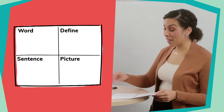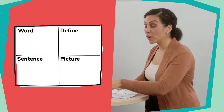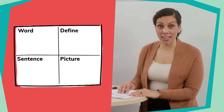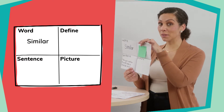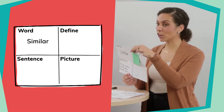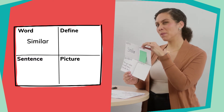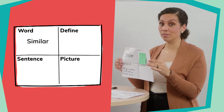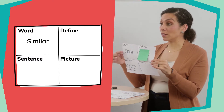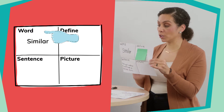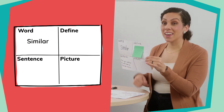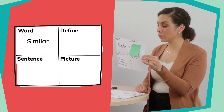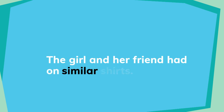Now that you've made your own graphic organizers, we're going to get ready to hear our first word for today. Our first word is the word 'similar.' Have you ever heard the word similar before? Maybe your teachers have used it or someone that you love. Let's write the word 'similar' in our top box that says 'word.' Now listen to me use the word similar in a sentence: the girl and her friend had on similar shirts.